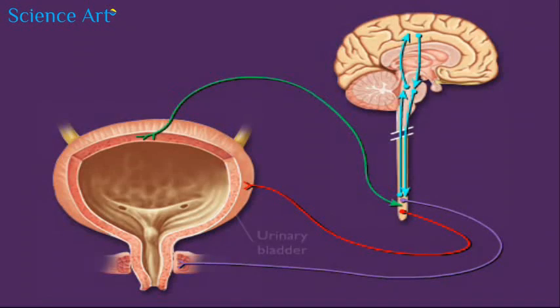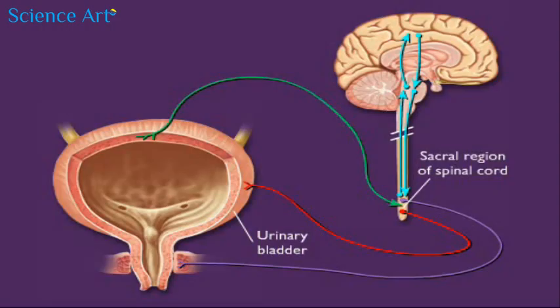The micturition reflex involves impulses traveling from the urinary bladder to the sacral region of the spinal cord and from the sacral region of the spinal cord back to the bladder. It is coordinated by neurons in the spinal cord and can be influenced by signals from the brain.